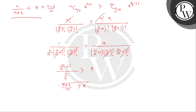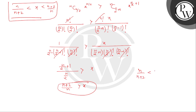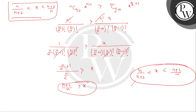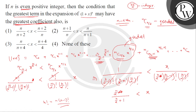Combining both conditions: n/(n+2) less than x less than (n+2)/n. This is our final answer. Matching with the options, the first option states n/(n+2) < x < (n+2)/n — this is a perfect match. This is our final answer.